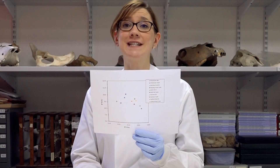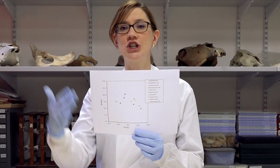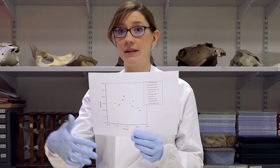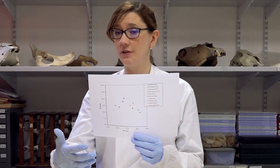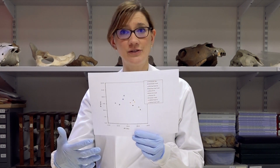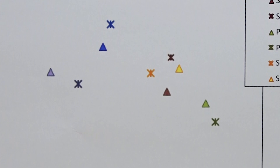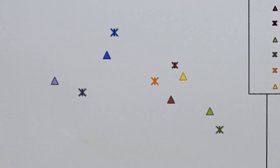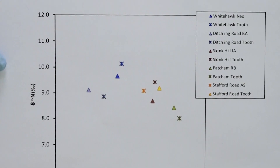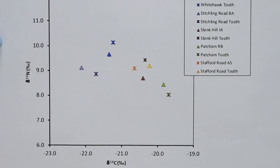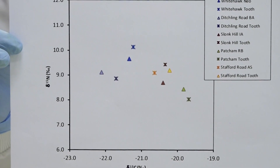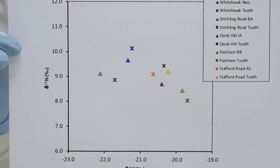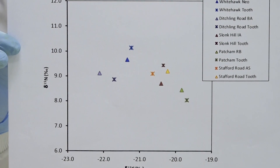What we wanted to understand was whether there was a change in diet between childhood — which comes from the tooth — and adulthood, which comes from the bone. All of the triangles plot quite close to their partner crosses, so what we're seeing is that diet between childhood and adulthood at these sites in the Brighton area didn't change that much.